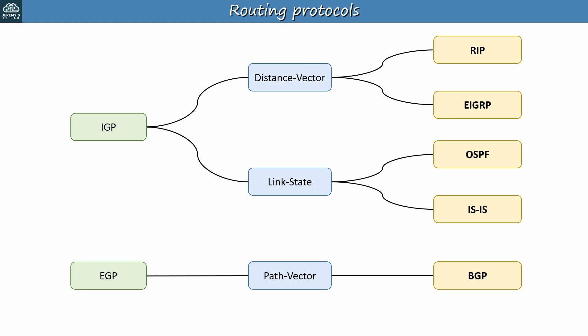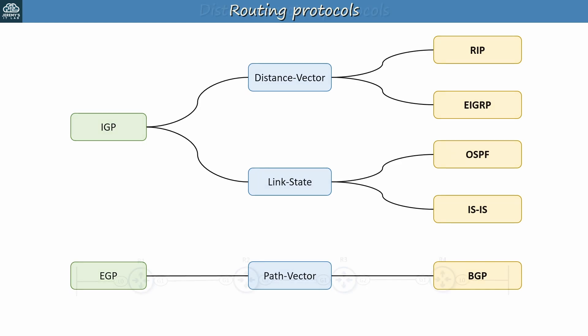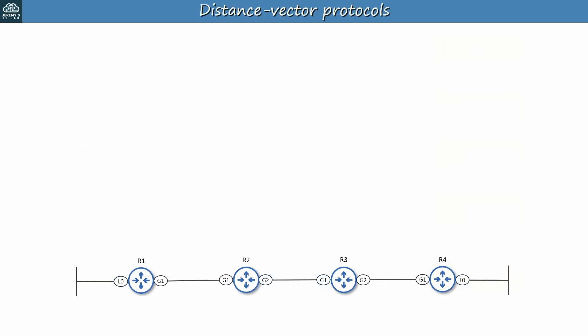We'll look at some general routing topics over the next few videos, but then each of these three protocols will have its own section. The NCORE exam isn't as focused on routing protocols as the NRC exam, but these are still some of the biggest NCORE topics. We won't look at any details of individual protocols in this video, but let's review each algorithm type, starting with distance vector.